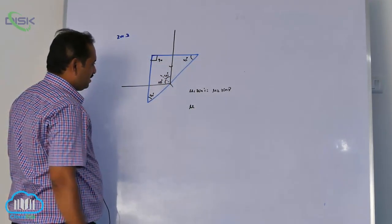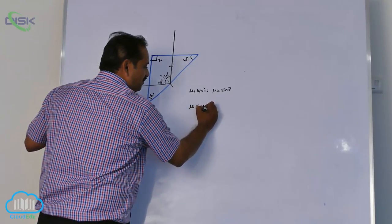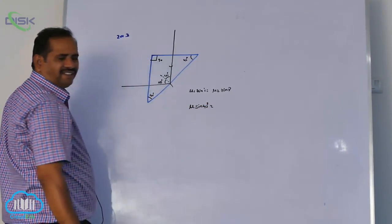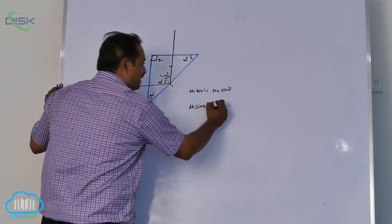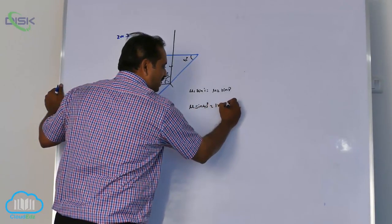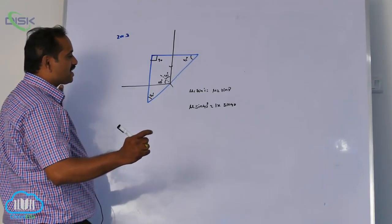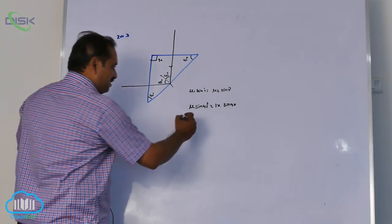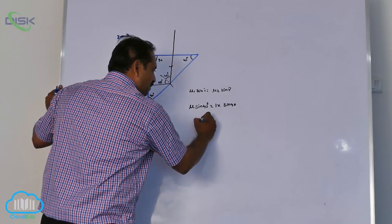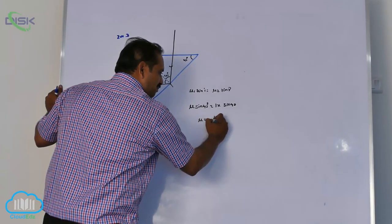For the critical condition, it is 1 × sin 90° because at the critical condition, sin r is 90° (r = 90°). So μ = 1/sin 45°.